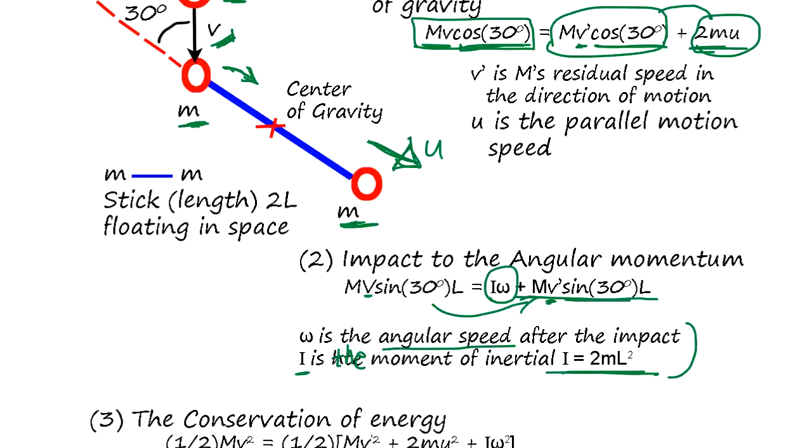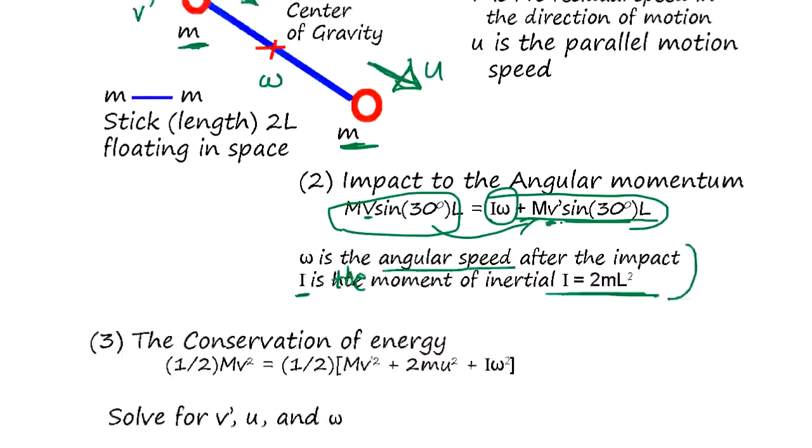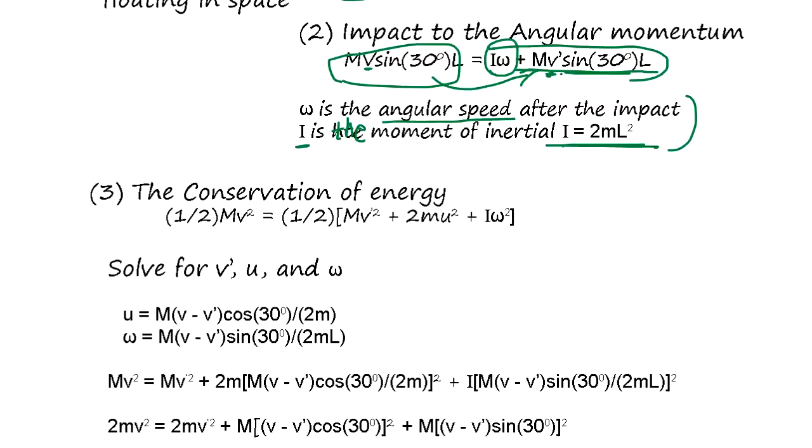Angular momentum plus the new momentum total should be same as original momentum. Now we have U, U, and omega, and new speed V. Three unknown parameters, so we need one more equation.